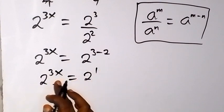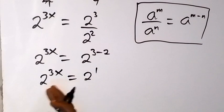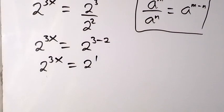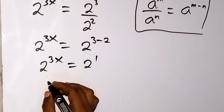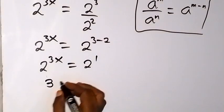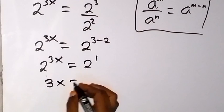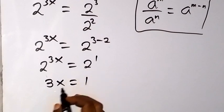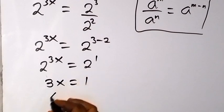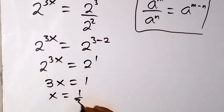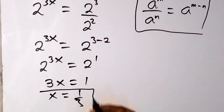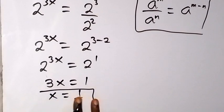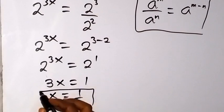So we have 2^(3x) equals 2^1. Since the bases are the same, we can equate the powers and say 3x equals 1. Dividing both sides by 3, x equals 1 over 3. So this is the value of x: x equals 1/3.